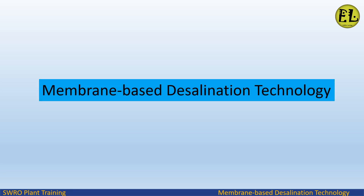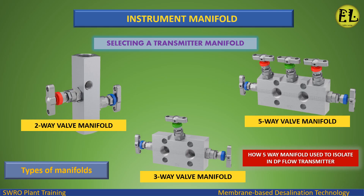Welcome to Endless Learning Training Series: The Membrane-Based Desalination Technology. We will study about types of manifolds — two-way valve manifold, three-way valve manifold, five-way valve manifold — selecting a transmitter manifold, and how a five-way manifold is used to isolate in a DP flow transmitter.